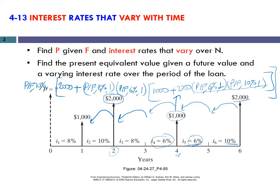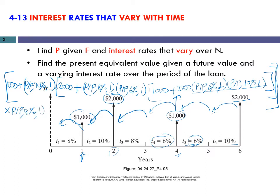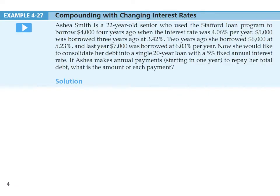Then I need to move everything one period backward by multiplying by P/F at 10% and 1. This value is the equivalent at the end of year one, and we also have 1000 there, so I add that 1000. Then I shift this value one period backward by multiplying by P/F at 8% and 1. You just plug in the values into these formulations, calculate equivalent amounts, add them up, and you will find the present value.